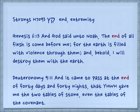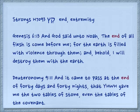Genesis 6:13 — And God said unto Noah, the end of all flesh has come before me, for the earth is filled with violence through them, and behold I will destroy them with the earth. Deuteronomy 9:11 — And it came to pass at the end of 40 days and 40 nights that Yehovah gave me the two tables of stone, even the tables of the covenant.